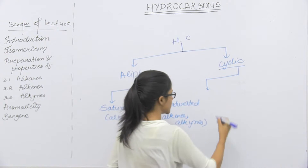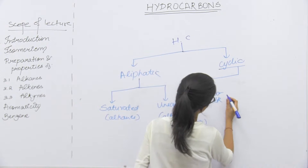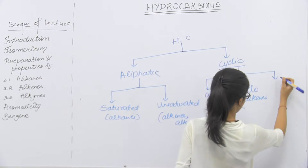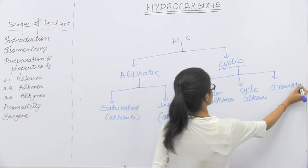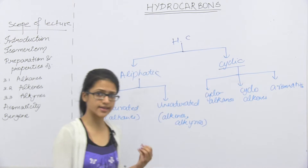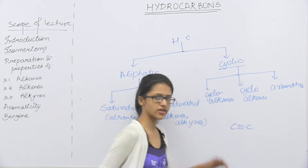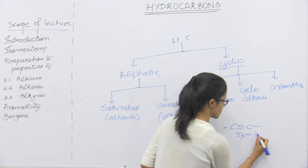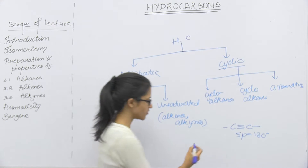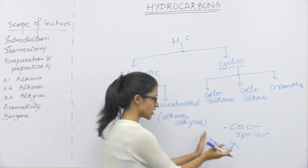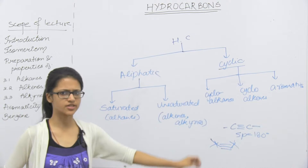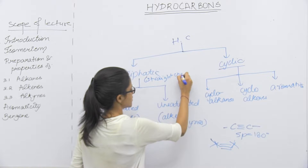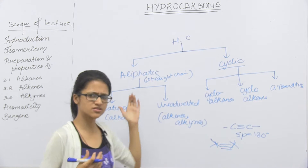For cyclic, we will do three parts: cycloalkanes, cycloalkenes, and aromatics. Cyclic will not make a straight chain form — it will only make a cyclic form. So cyclic has three parts, and aliphatic has two parts. Aliphatic refers to straight chains.